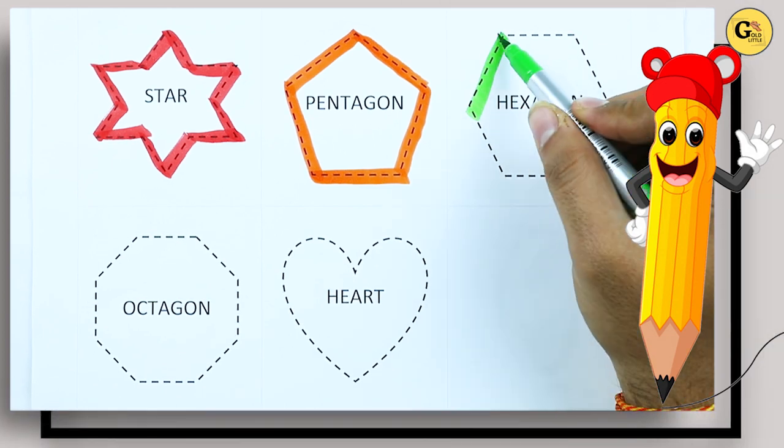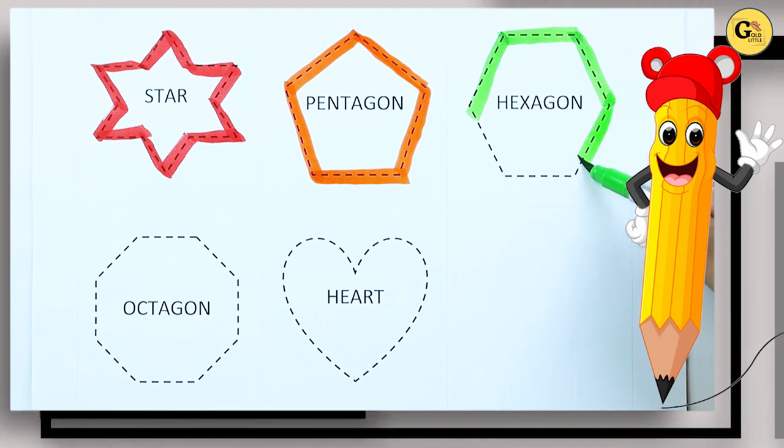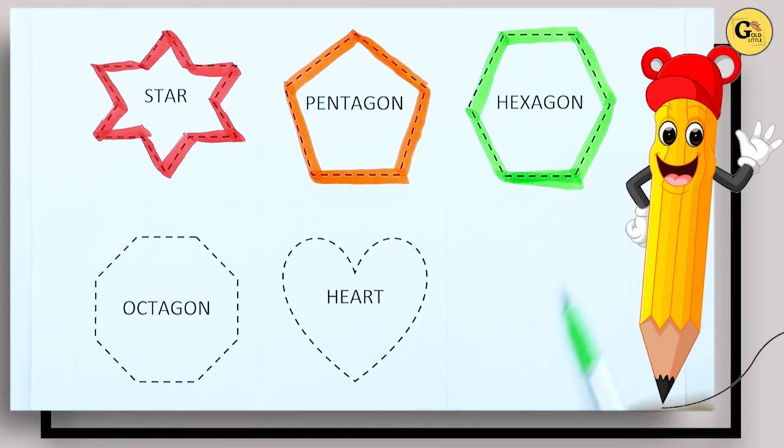Hexagon: one line, two line, three line, four line, five line, six line. It's a hexagon.